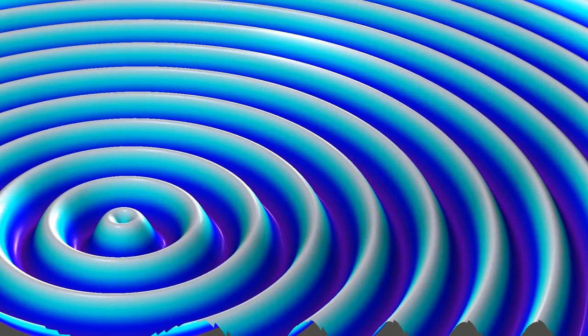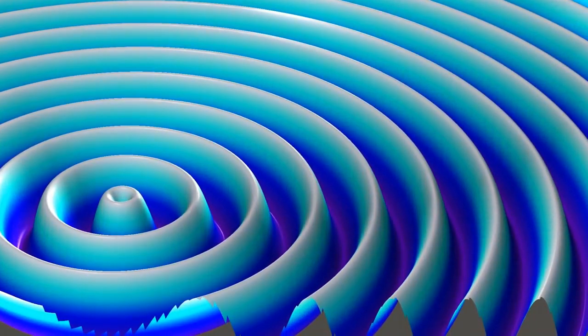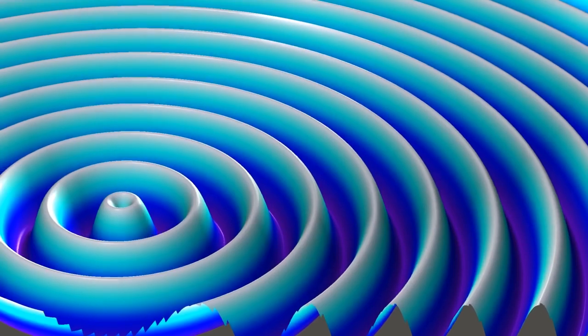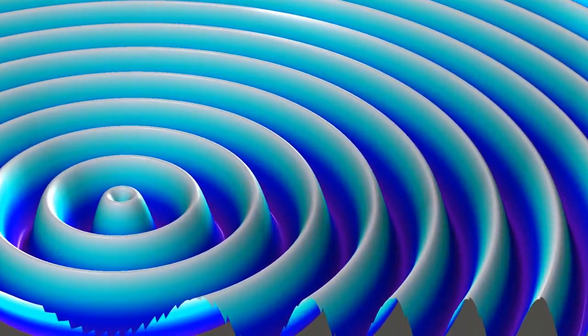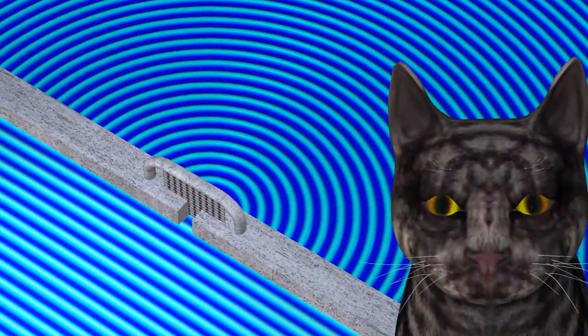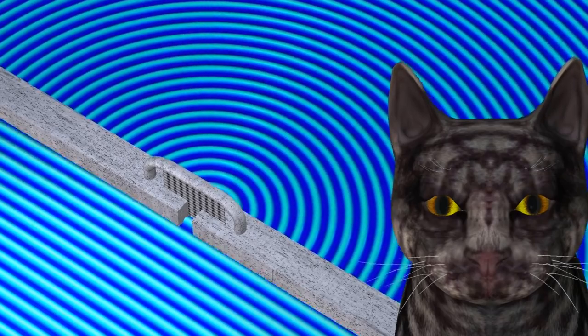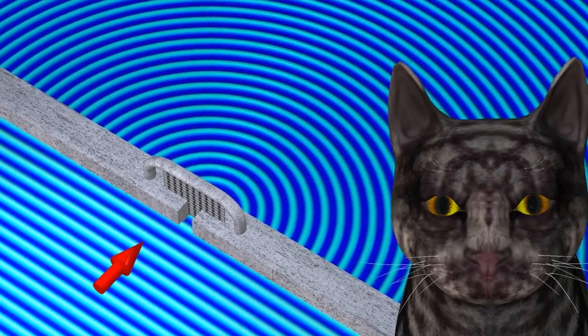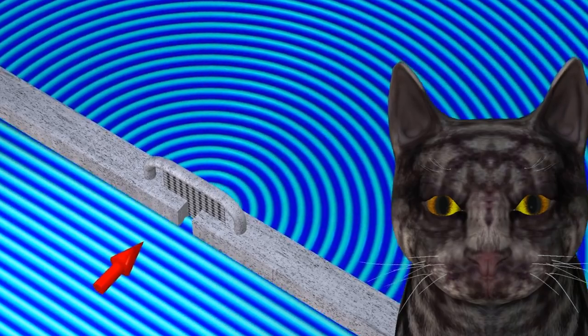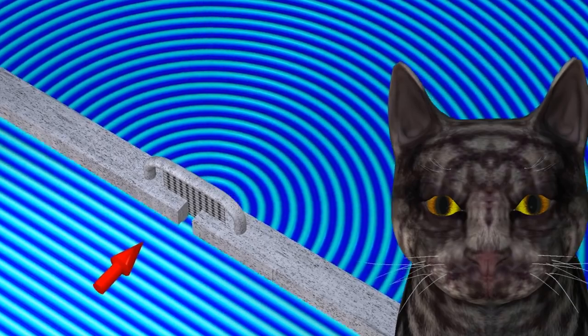The wave only describes the probability of where we will see the marble when we look at it. The probability of the marble being at a particular location is given by the wave's amplitude. The higher the amplitude of the wave at a particular location, the higher the probability that we will see the marble there when we look. This means that we can never simultaneously know both the position and the momentum. Before the wave hits the detector, we know exactly what direction the momentum is in, but we know nothing about the object's position.